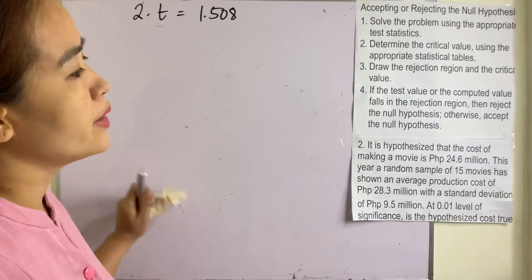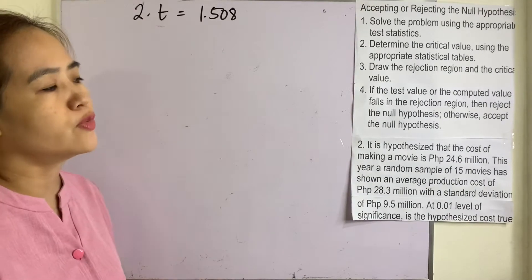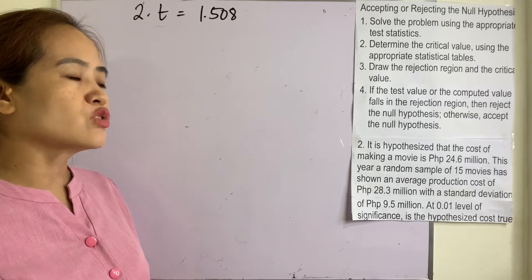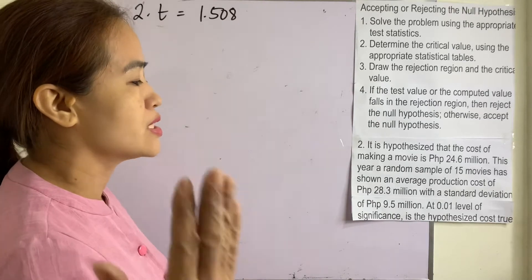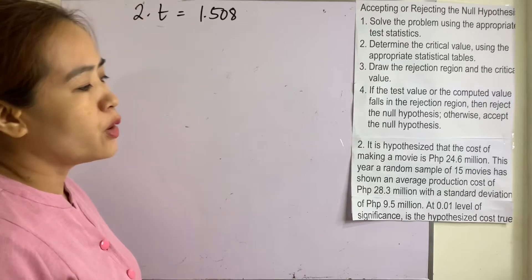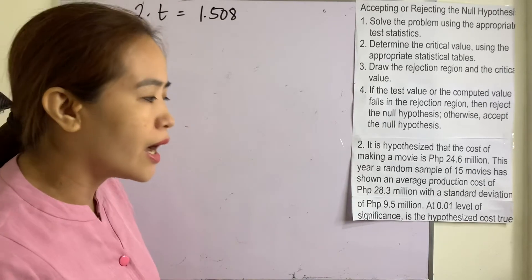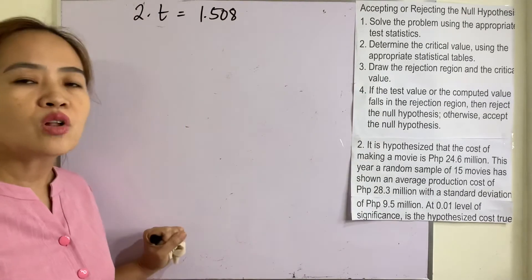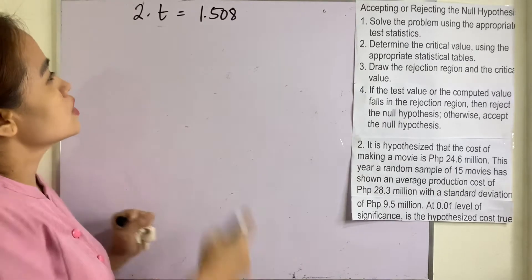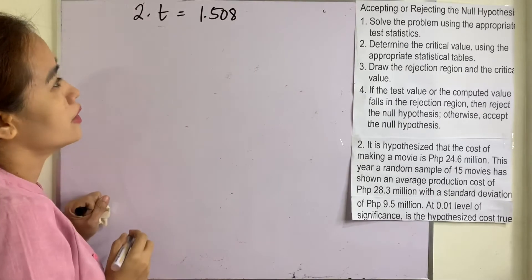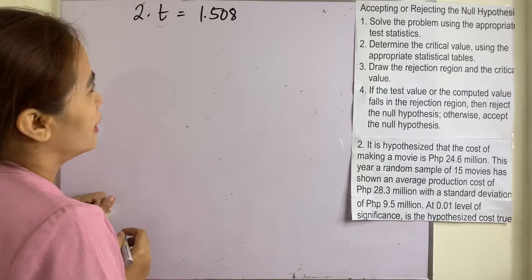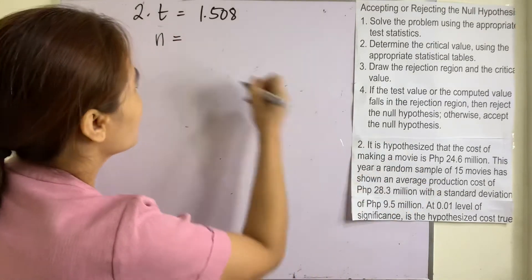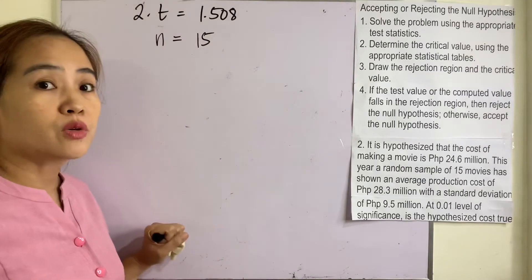Example number 2: It is hypothesized that the cost of making a movie is 24.6 million. A random sample of 15 movies has shown an average production cost of 28.3 million with a standard deviation of 9.5 million. At 0.01 level of significance, is the hypothesized cost true? We already solved for the T statistic, which is 1.508. Since N is 15, we use the T distribution.